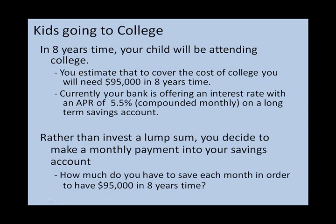Last lecture, we looked at how much money we would need to save so that our kids could go to college. This time, we're going to complicate the example somewhat. In eight years time, your child will be attending college, and you estimate you're going to need $95,000 in eight years time. Your bank is offering a savings account with an APR of 5.5% compounded monthly. What's more realistic is that you're going to make a monthly payment into your savings account, and the question is: how much do you have to save each month to have $95,000 in eight years time?